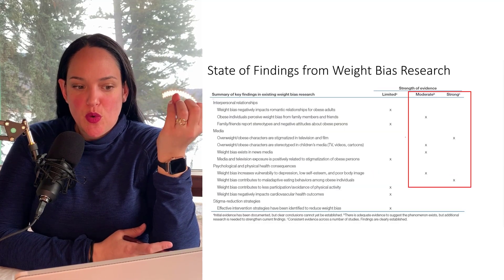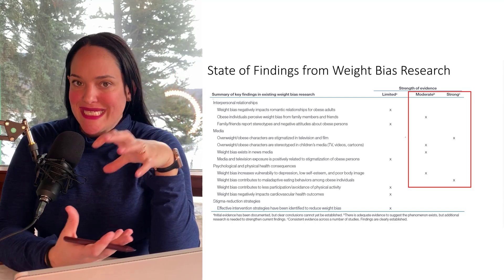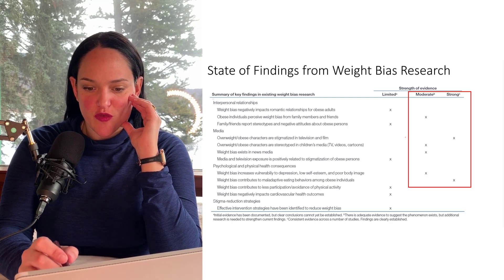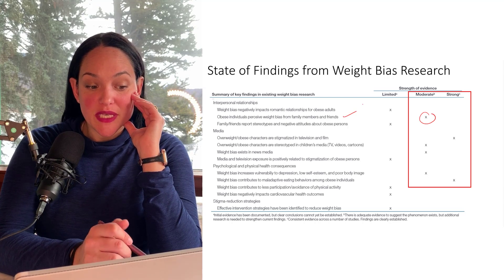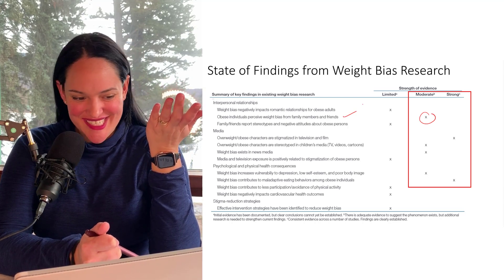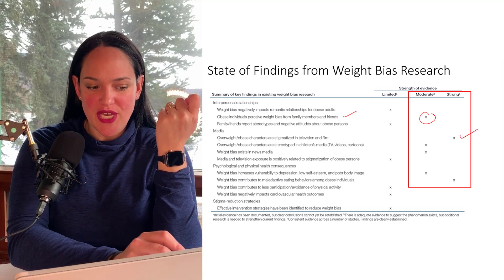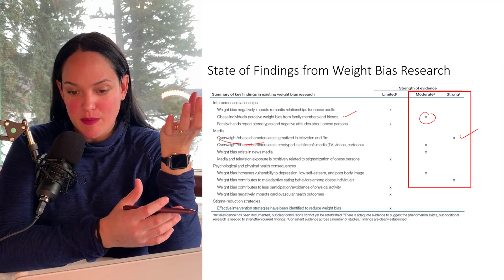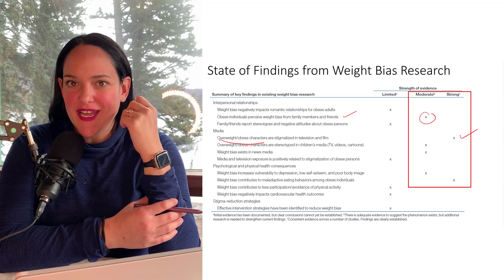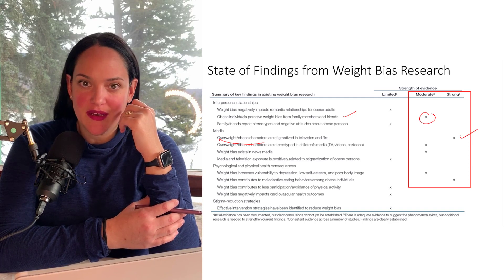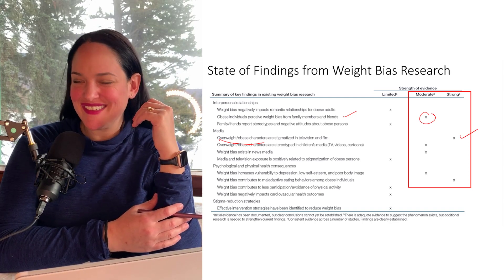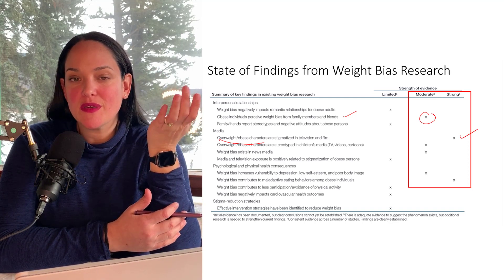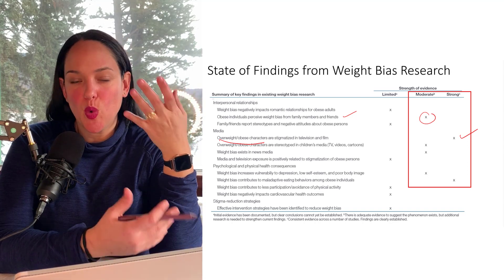Synthesizing the evidence from many studies on weight bias, there is moderate to strong evidence on several findings. There is moderate evidence that individuals with obesity perceive weight bias from family and friends, and strong evidence that overweight and obese individuals in films and TV are often stigmatized — fat jokes are normalized. For example, the beloved Canadian comedian John Candy lamented that while he was funny on his own merits, virtually all the jokes written for him were weight-based. Weight bias is also prevalent in news, general media, and children's media.